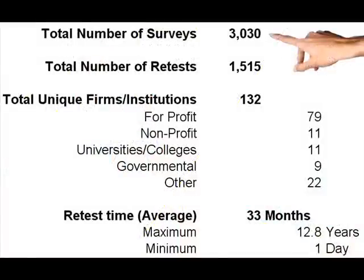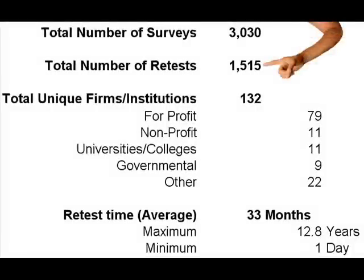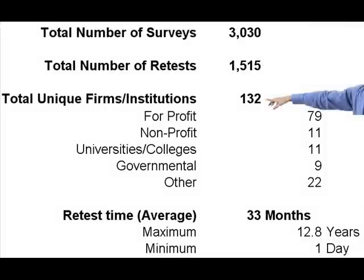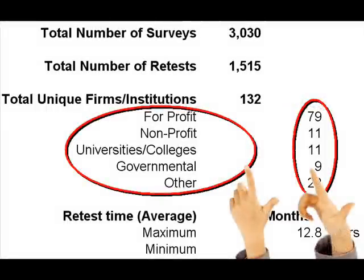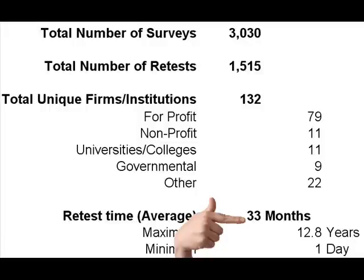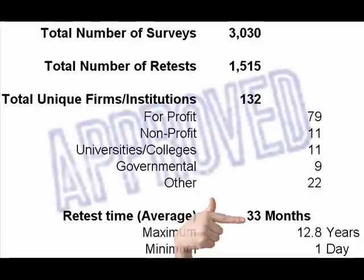This is an outline of the sample. From our database, we identified 3,000 plus individual instances where the same person had taken the survey more than once, which means that we had over 1,500 test and retest pairs that we could analyze. The participants came from over 132 distinct establishments, including profit, non-profit, university, and government organizations. The time between test and retest ranged from about 1 day to over 12 years, with an average time of around 33 months.